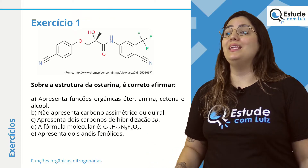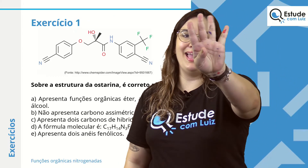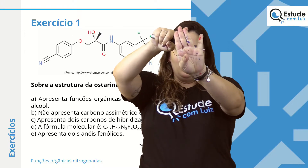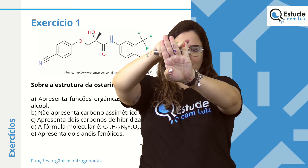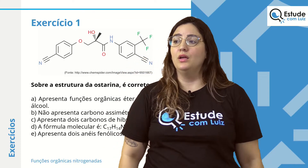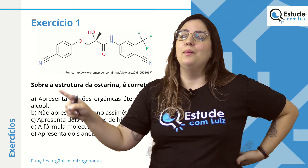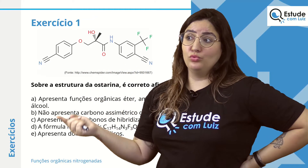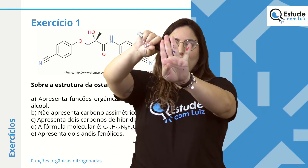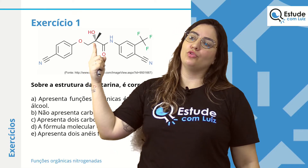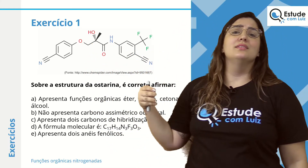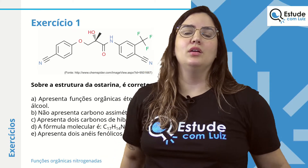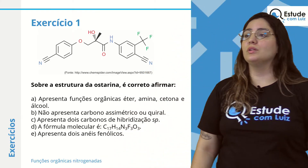Letra C: apresenta dois carbonos com hibridização SP. O carbono SP é aquele que faz uma ligação tripla e uma simples — sobra apenas um vãozinho entre os dedos pela regra da mãozinha. Na estrutura da ostarina, temos uma ligação tripla com dois carbonos SP. Os da ligação dupla são SP2, e os demais são SP3. Então a letra C parece estar correta.